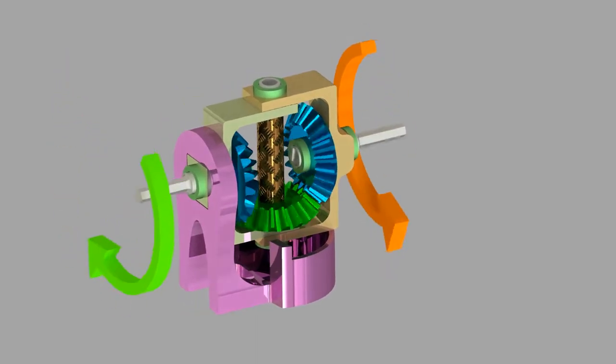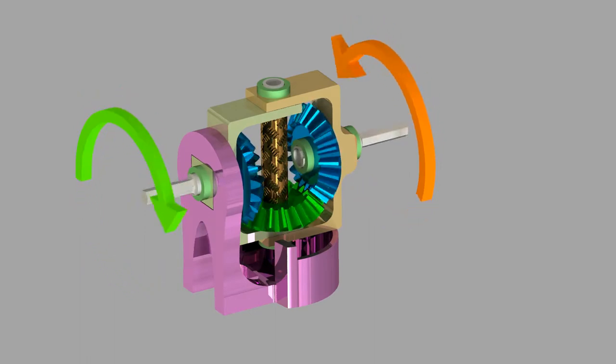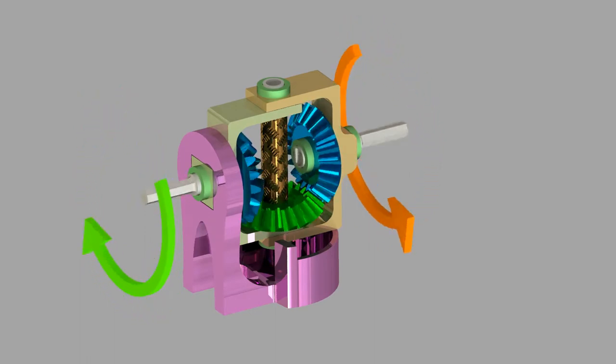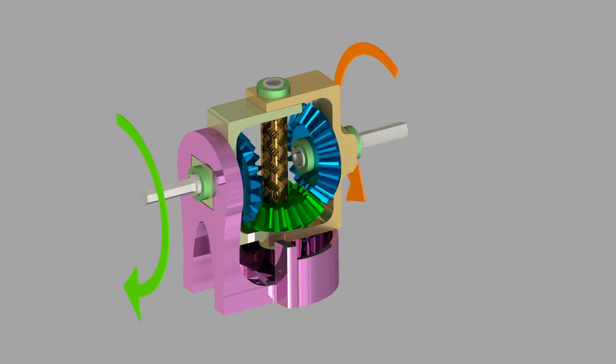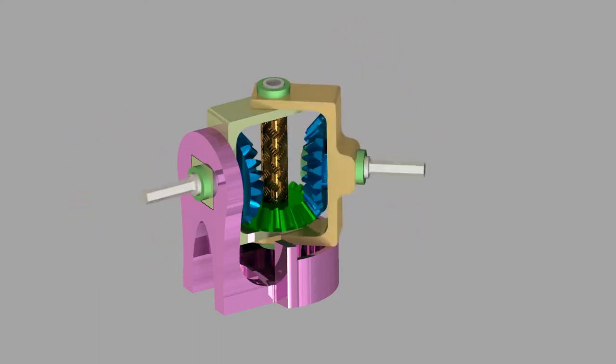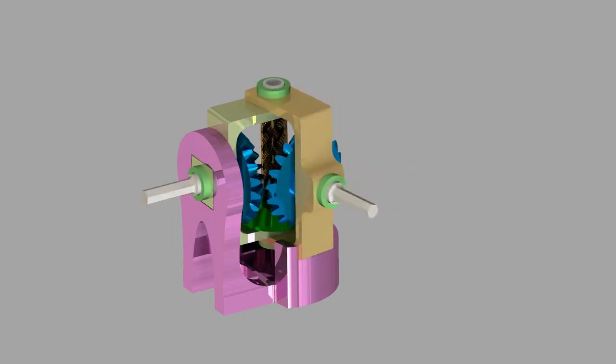You'll notice there are three bevel gears being used in this model. We would have included a fourth bevel gear and still retained its rotation reversing capability. However, by using only three bevel gears, we're able to use this coupling over a wide range of dynamic angular misalignment.